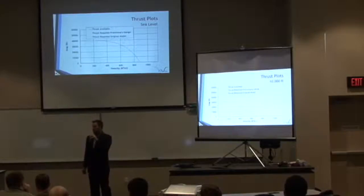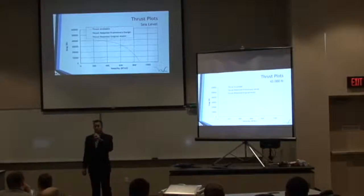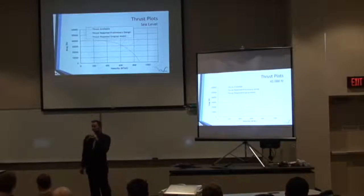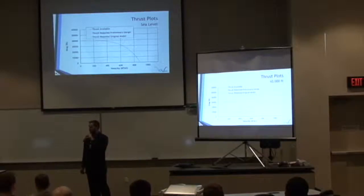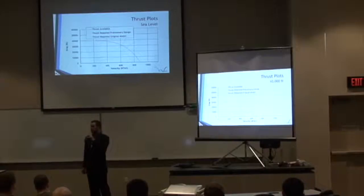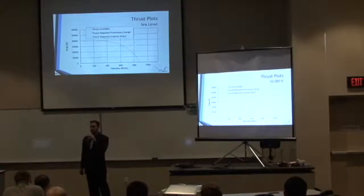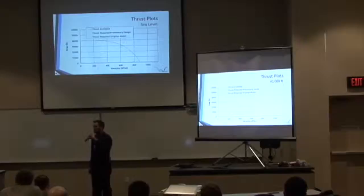With the VN diagram and our thrust available versus thrust required, we can plot our thrust plots. On the primary screen is sea level and the secondary screen is 10,000 feet. The orange line is thrust available, assumed equal for both designs. The green line is original model thrust required (drag), and the blue line is drag for the preliminary design. Maximum speed decreased from 700 knots to around 600 knots at sea level, and decreased again at 10,000 feet — again due to increased pressure drag from separation on the original model.